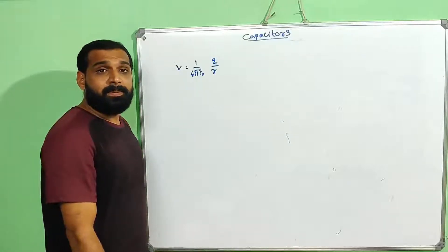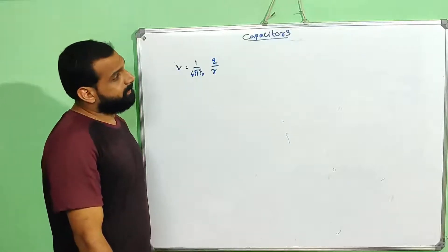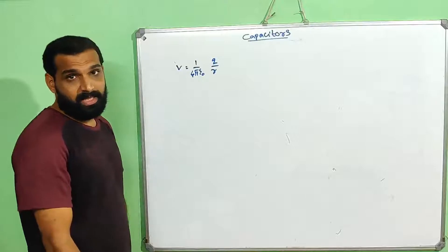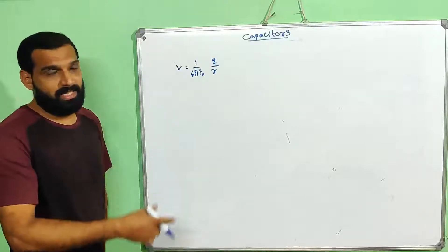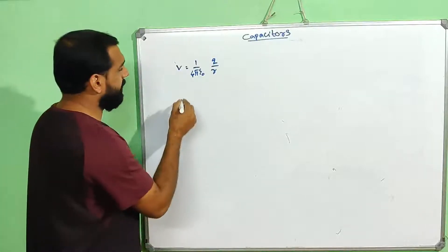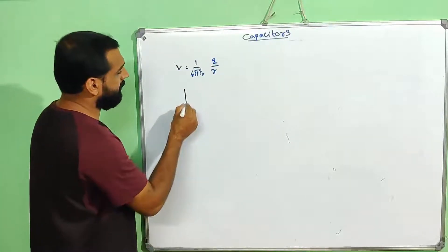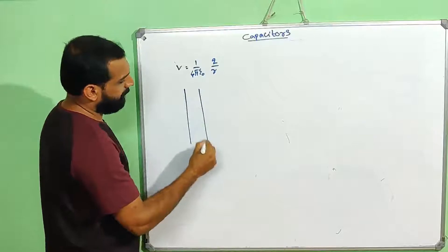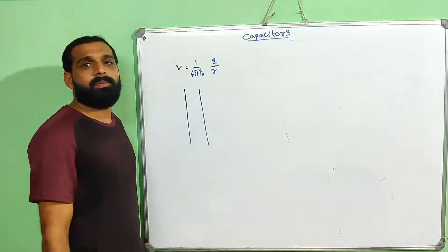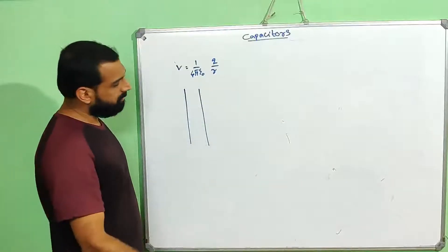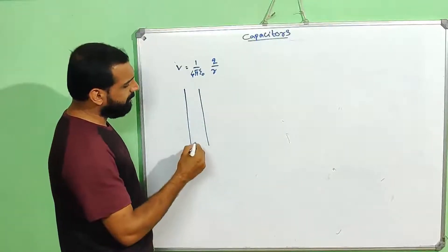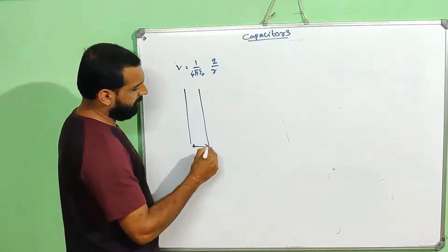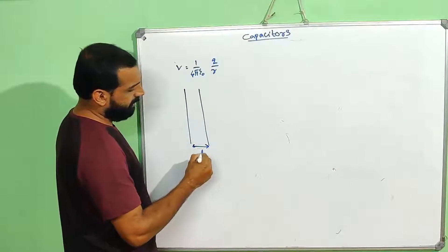Now we have two conductors in the capacitor arrangement. If we have the capacitor, we have two conductors in the capacitor.